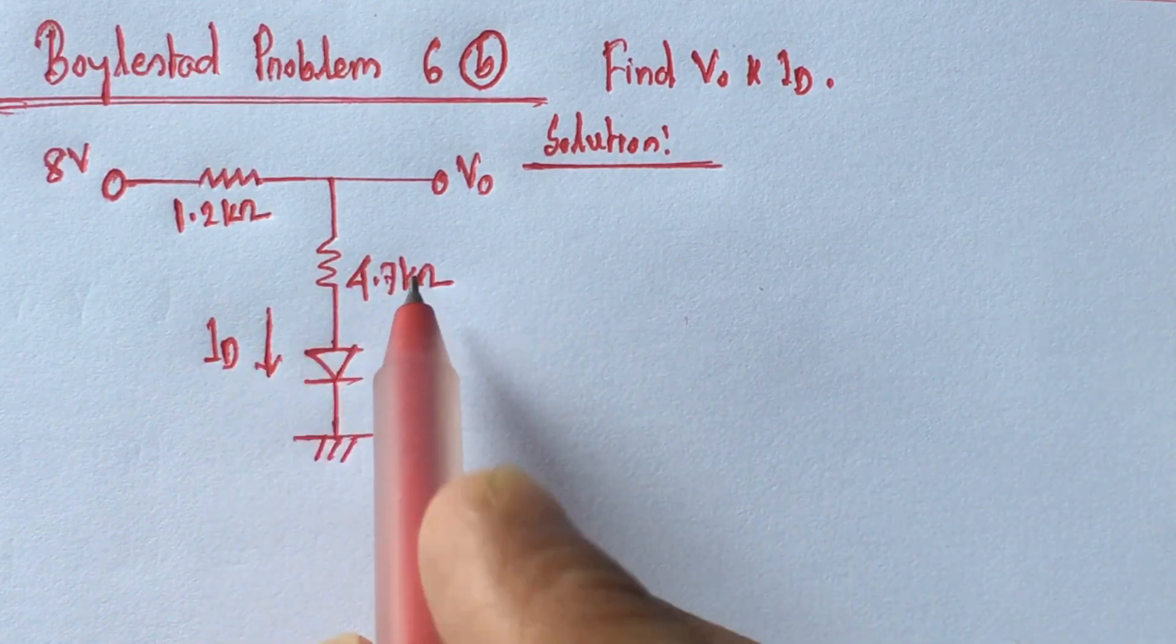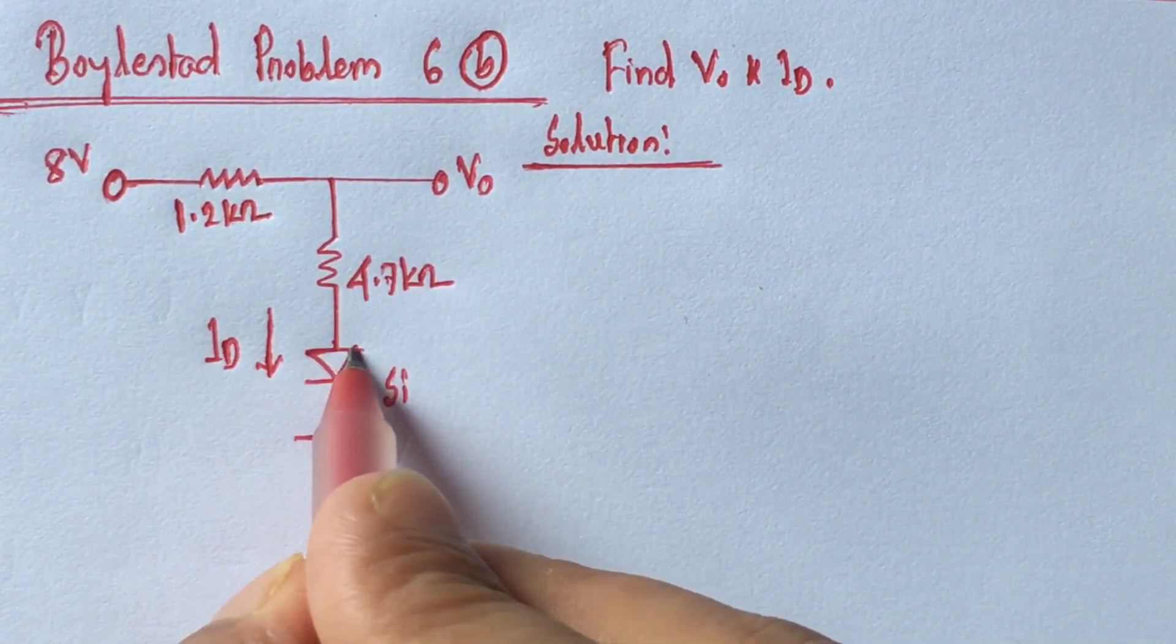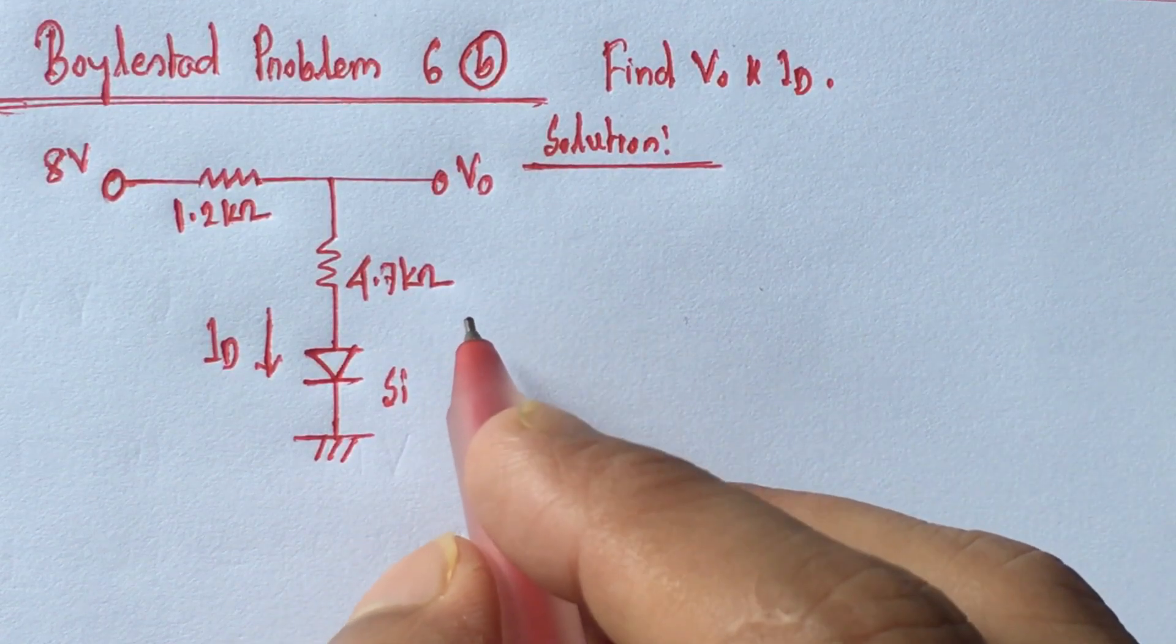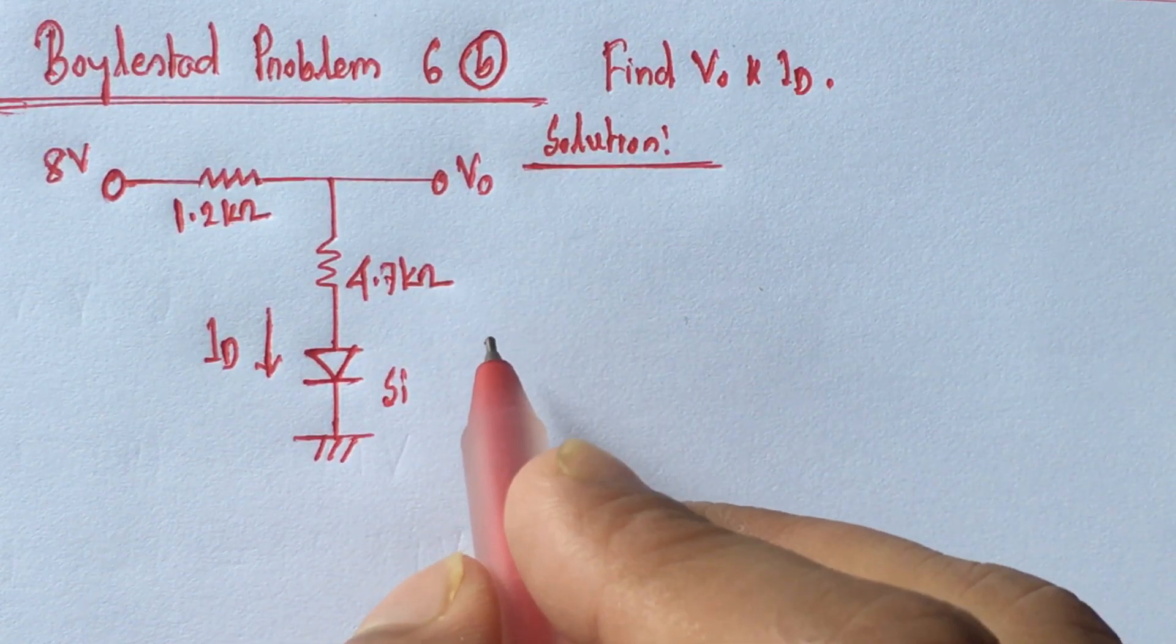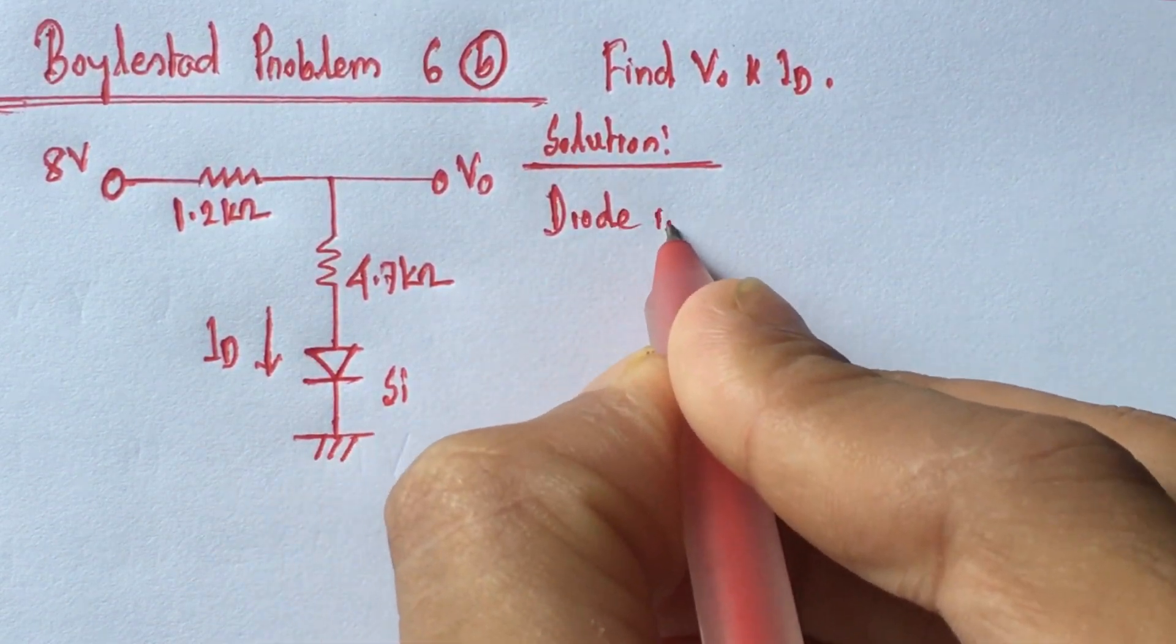From the circuit, we see that 8 volts is applied here and this is the positive end of the diode. So the diode will be on.